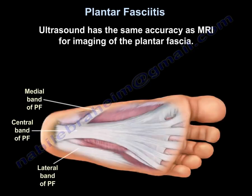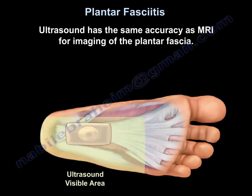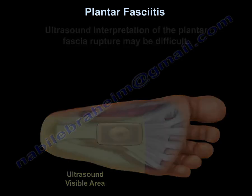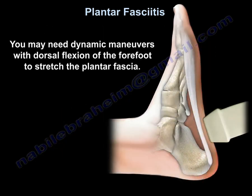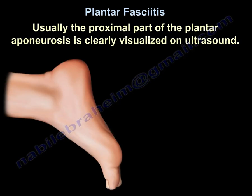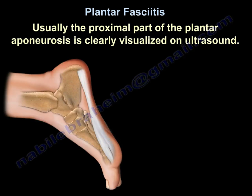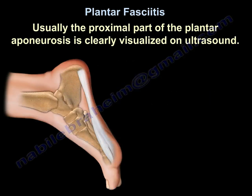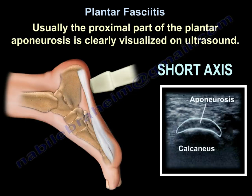Ultrasound has the same accuracy as MRI for imaging of the plantar fascia. Ultrasound interpretation of plantar fascia rupture may be difficult. You may need dynamic maneuvers with dorsal flexion of the forefoot to stretch the plantar fascia. Usually the proximal part of the plantar aponeurosis is clearly visualized on ultrasound, as you can see here in this image that shows both the long axis and the short axis of ultrasound images.